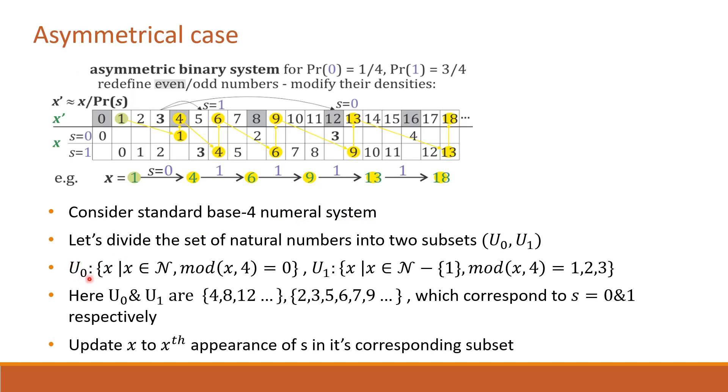Here U0, which corresponds to s equal to 0, contains natural numbers which are multiples of 4, and U1, which corresponds to s equal to 1, contains all other natural numbers excluding 1. So U0 basically consists of the set 4, 8, 12 and so on, and U1 consists of the set 2, 3, 5, 6 and so on.